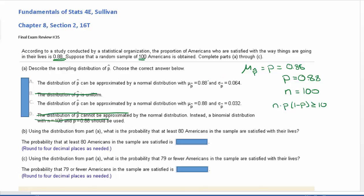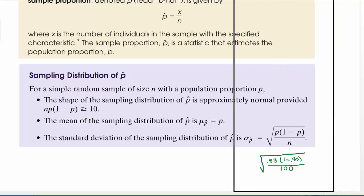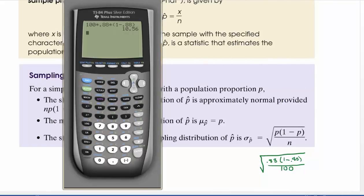But we do need to calculate the standard deviation. If we scroll back down to the purple box, our standard deviation is going to be the square root of p times 1 minus p over n. So our p is 0.88 and then 1 minus p, so 1 minus 0.88, over our sample size of 100. I'm going to plug that in the calculator right quick.